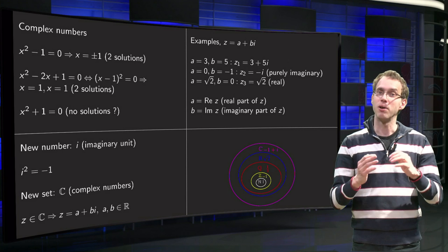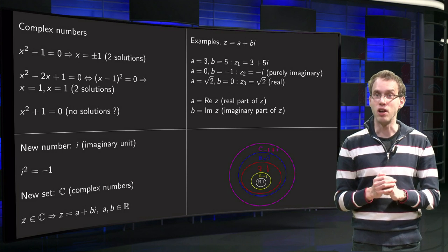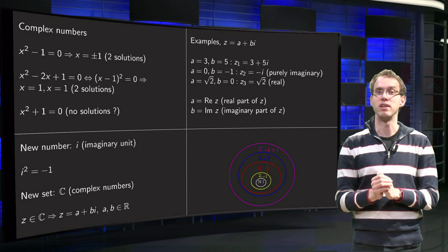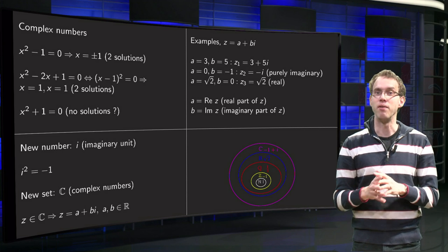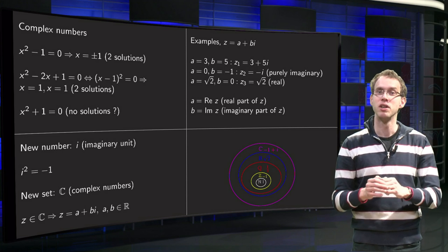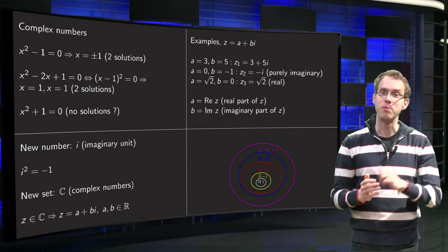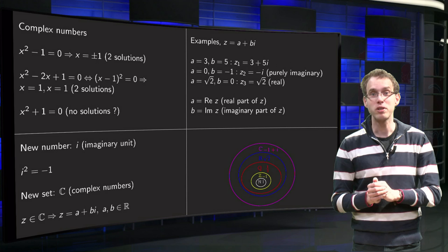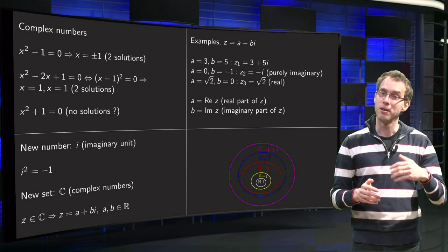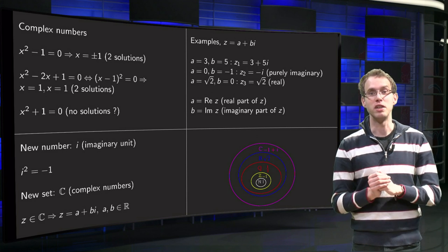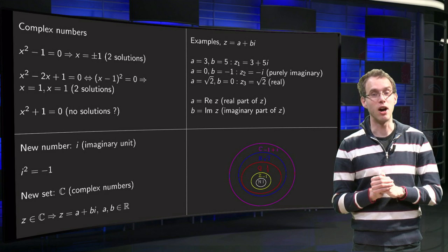And now, finally, we are at the last set, which is around that one, that's the set of complex numbers, and we are done with all sets of numbers, which surrounds all the other sets we've seen up till now. So now you know what the complex numbers are, how they are defined, and what the imaginary parts of a complex number are.